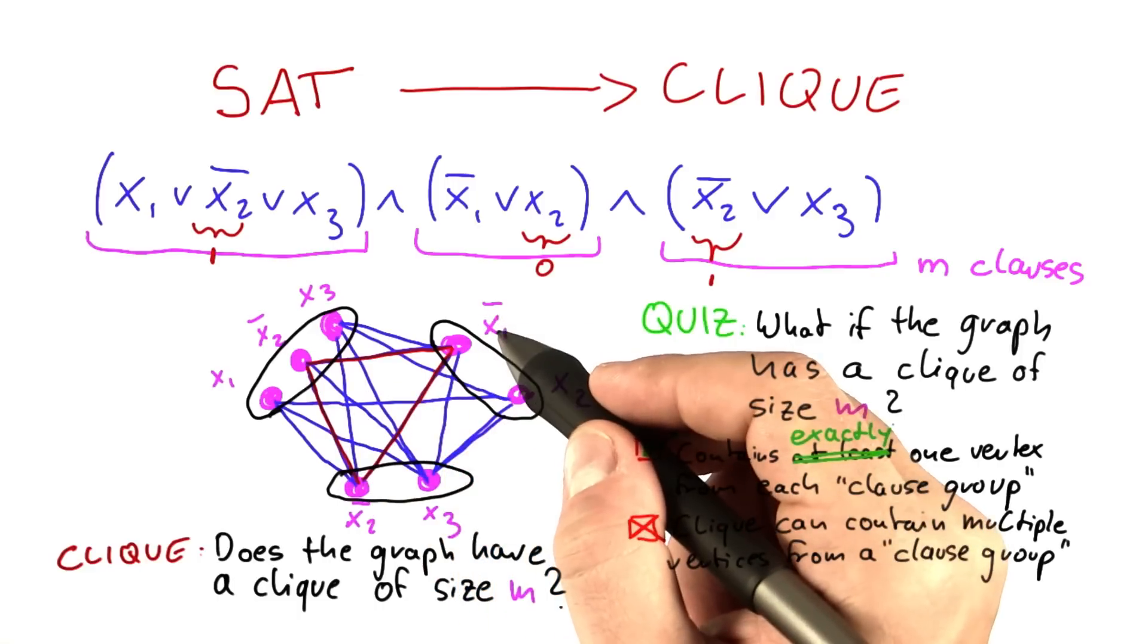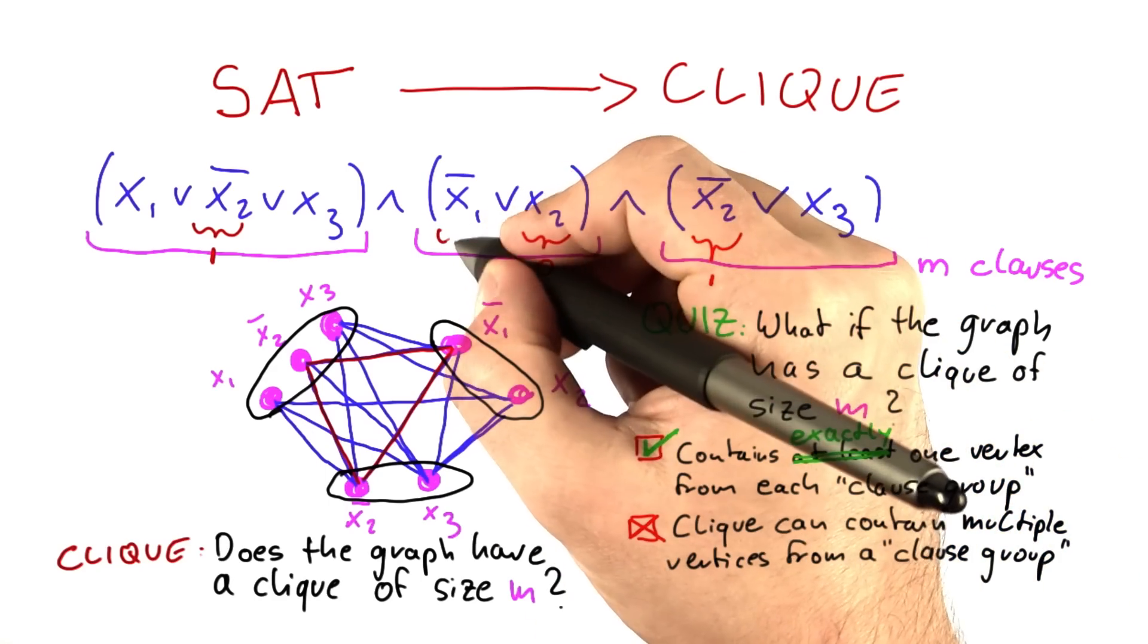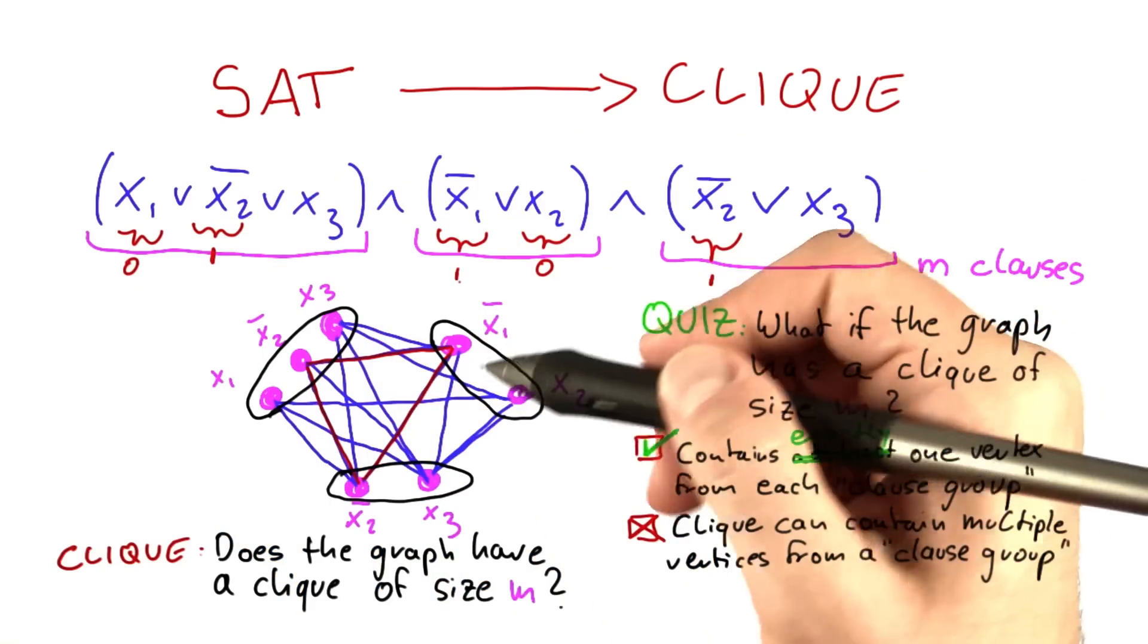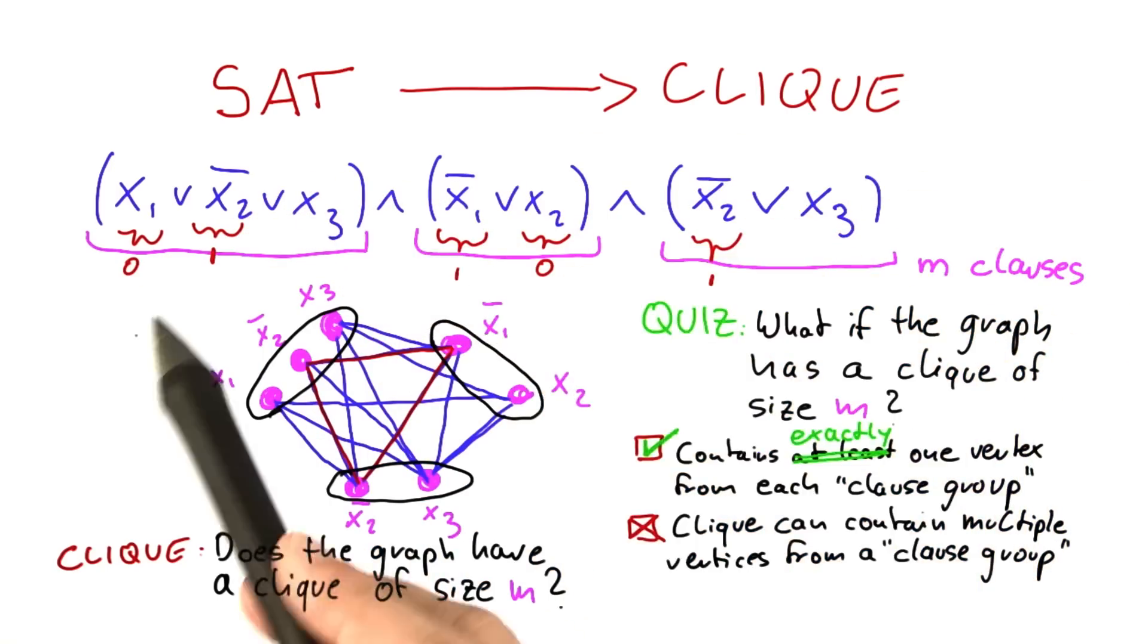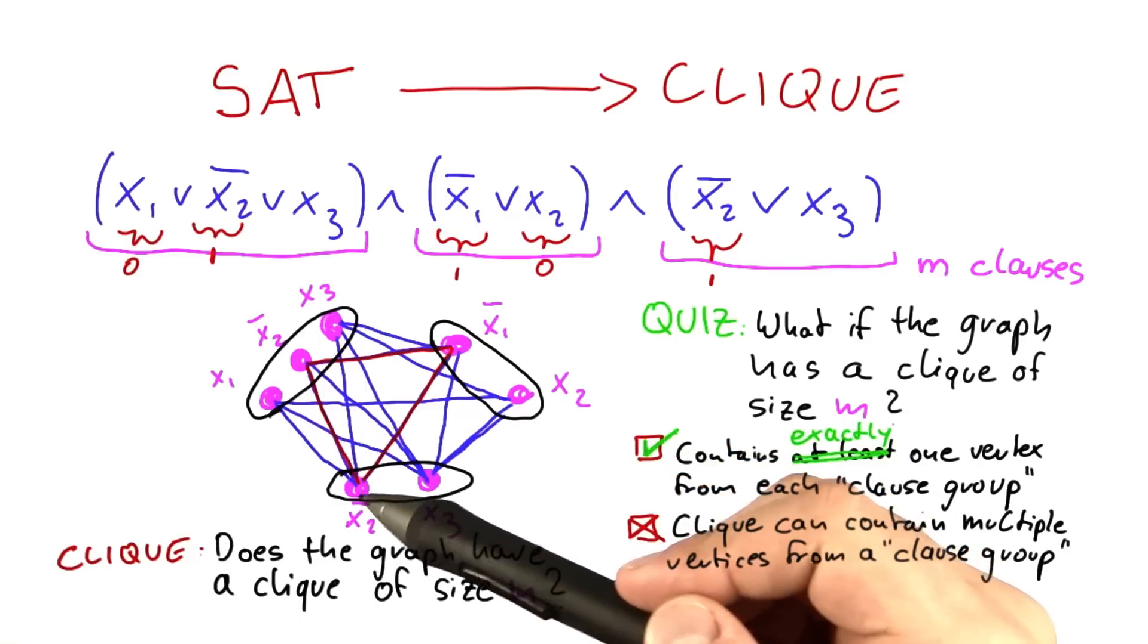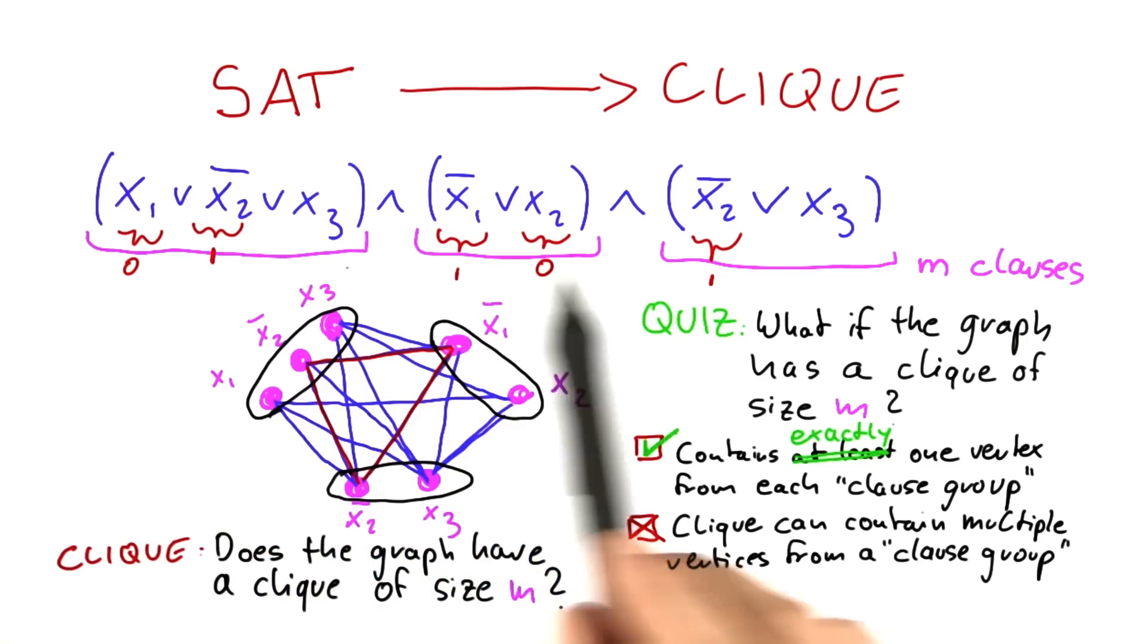x1, we haven't yet talked about x1, but we can just do the same thing. We can set x1 to false so that not x1 becomes true. We've set it to false. And we haven't even looked at x3, but all of the clauses are already satisfied. And that's actually the cool thing to notice here. x3 is also not contained in the clique. So the vertices in the clique tell you how to set the variables so that the Boolean formula can be satisfied.